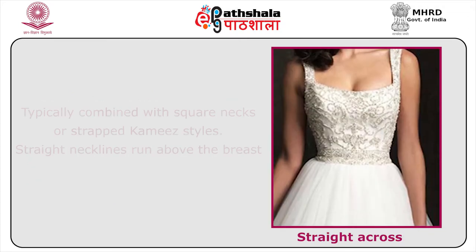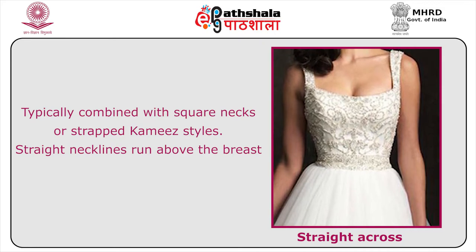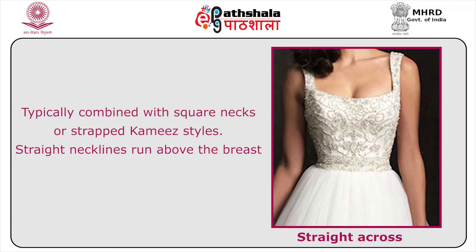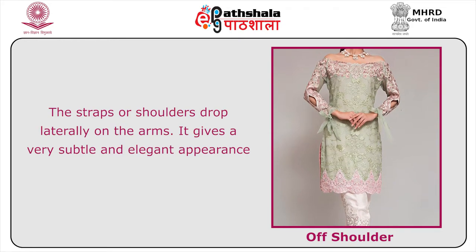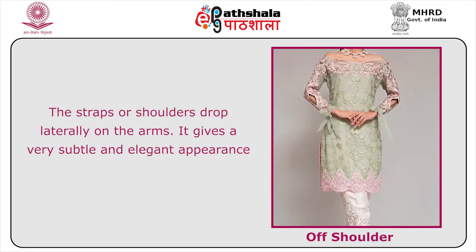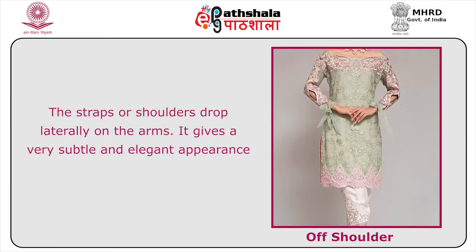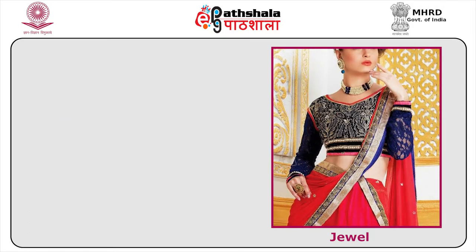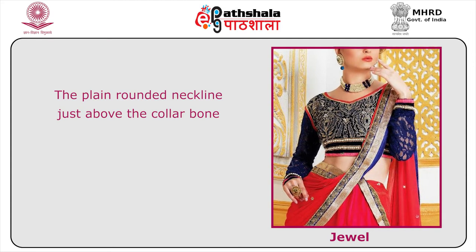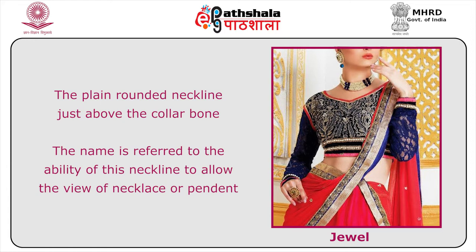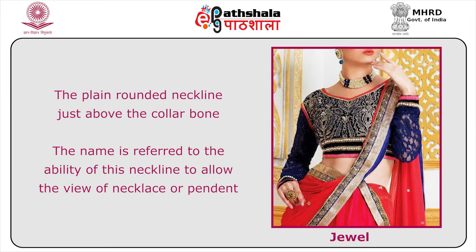Straight across necklines are typically combined with square necks or strapped kameez styles, running above the breast. Off-shoulder styles have straps or shoulders dropping laterally on the arms, giving a subtle and elegant appearance. The jewel neckline is a plain rounded neckline just above the collar bone, named for its ability to showcase a necklace or pendant.